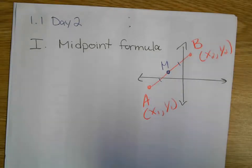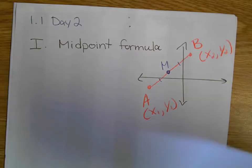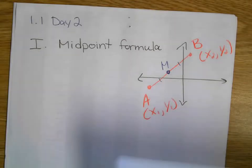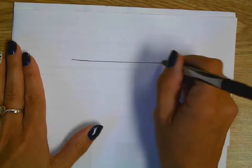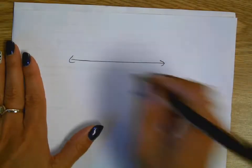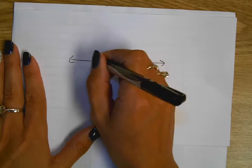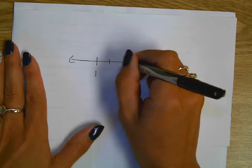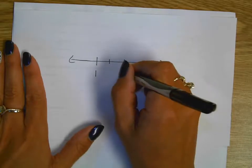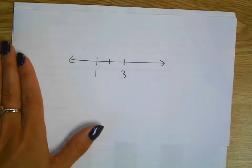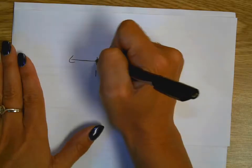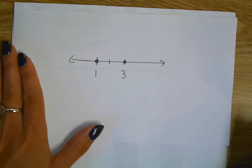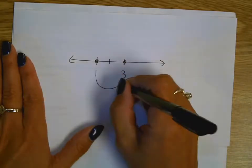Okay, now you can stop writing, just look. I want you to come up with a way where hopefully you can remember this without saying, oh I got to look at my notes to get this formula. Think midpoint, think middle. Think about a number line. Say you were at 1 and 3. Where's the middle?